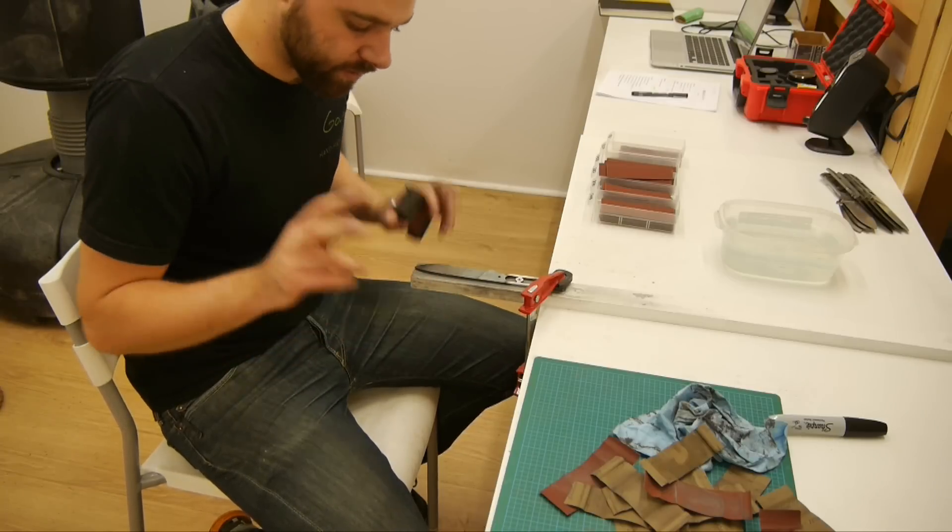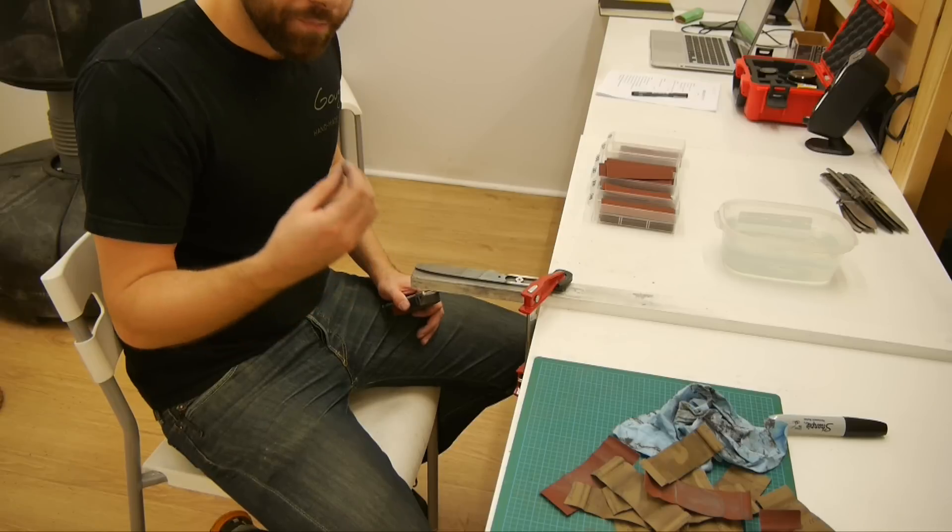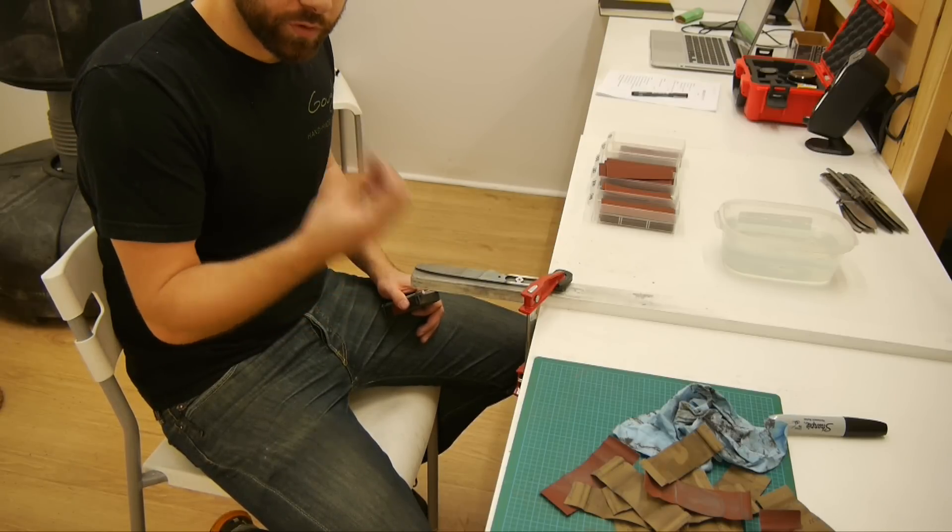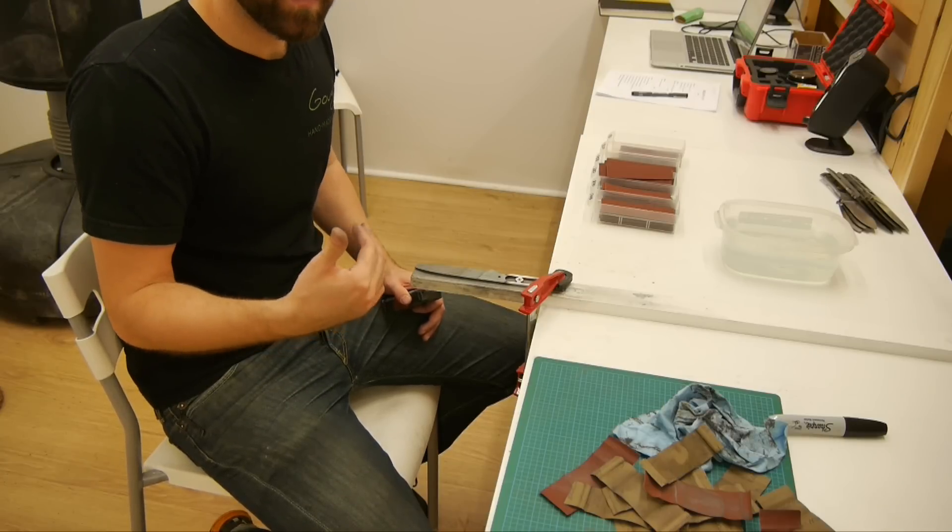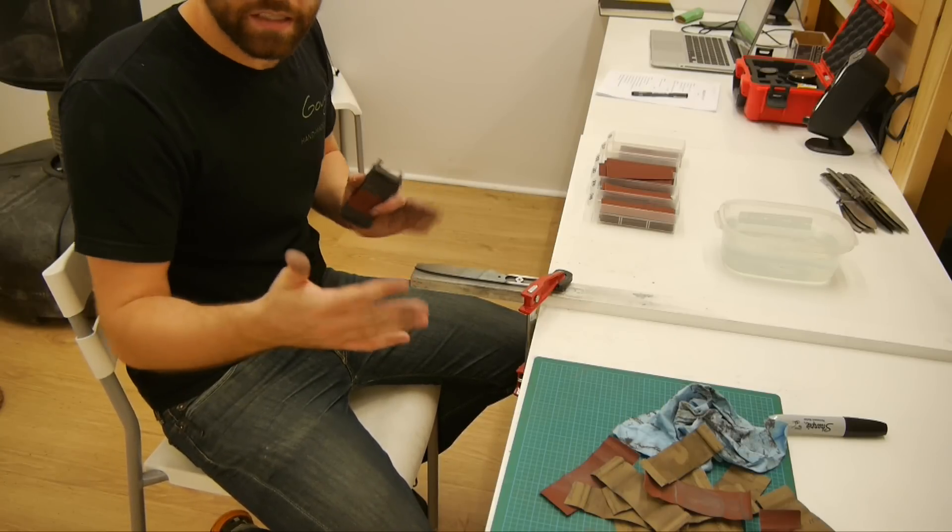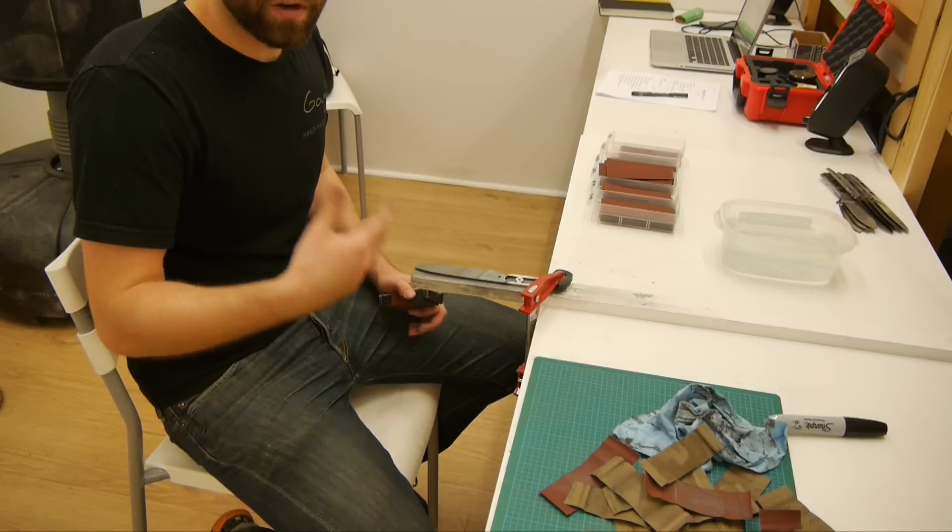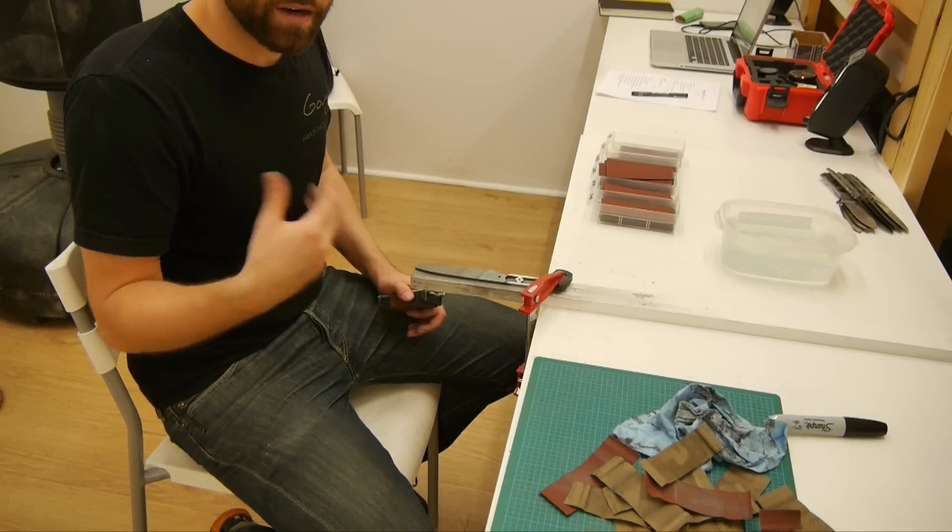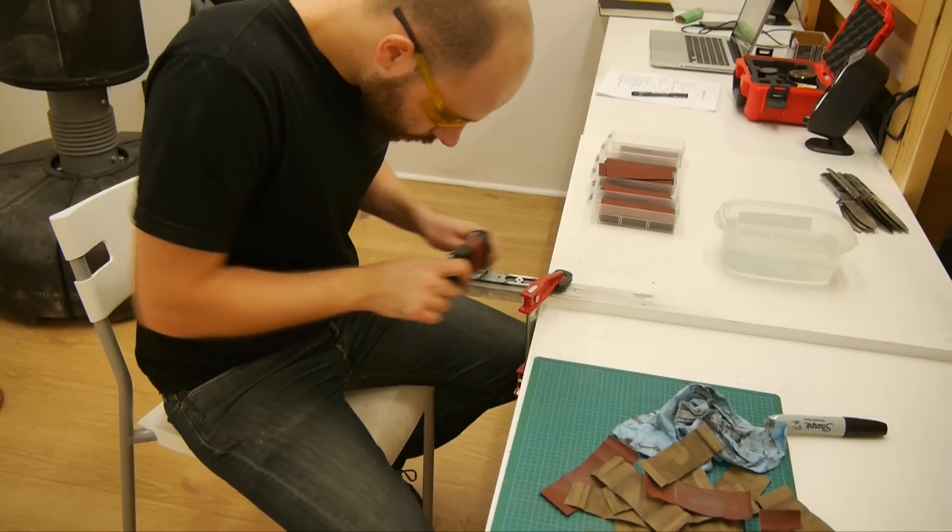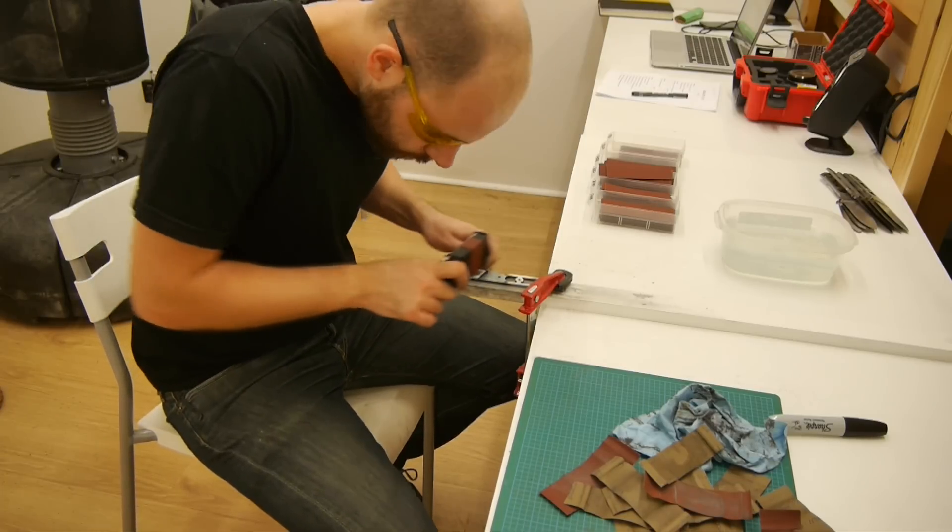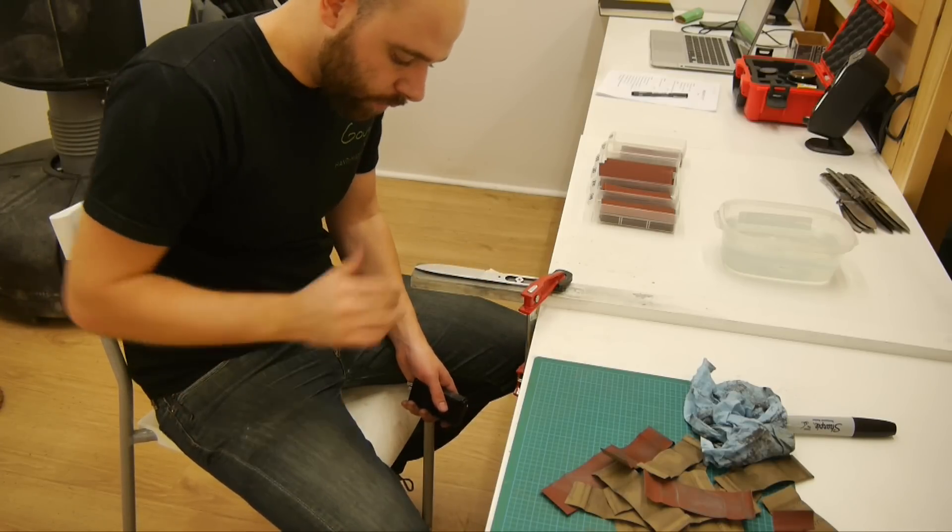Before heat treat I sanded this blade to 600 grit. Now that we've heat treated it I want to sand it again with 600 grit because the steel is harder which means that the individual grit isn't going to bite as deeply as it did when the steel was soft. So 600 grit on soft steel and 600 grit on hard steel is a bit different. So to make up for that we want to sand it again at 600 grit to make sure that we don't have any grit marks in there that are hard to get out with the higher grits going forward.